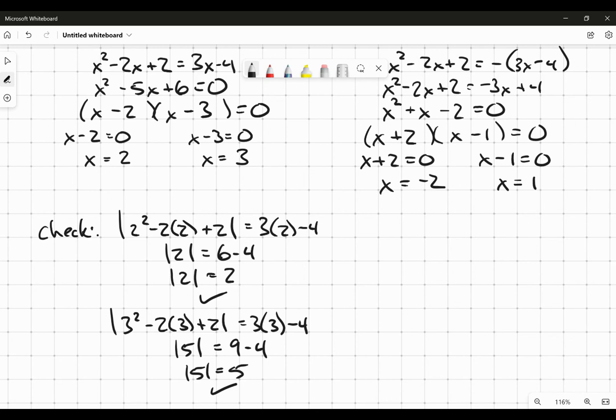Now let's check the other side. Remember, I'm checking this back into the original equation. This is negative 2 squared minus 2 times negative 2 plus 2 equals 3 times negative 2 minus 4. Without doing any other work, I know the answer is no solution.